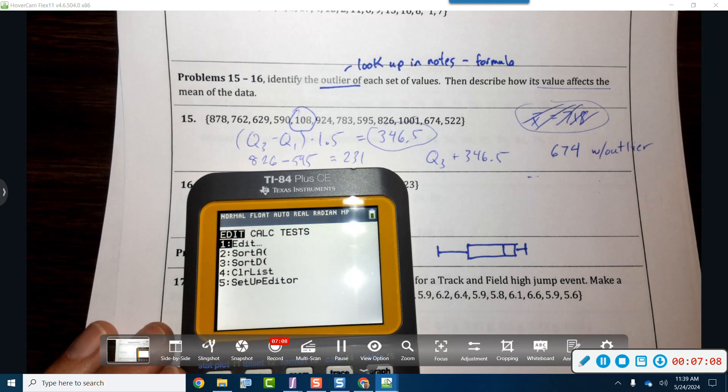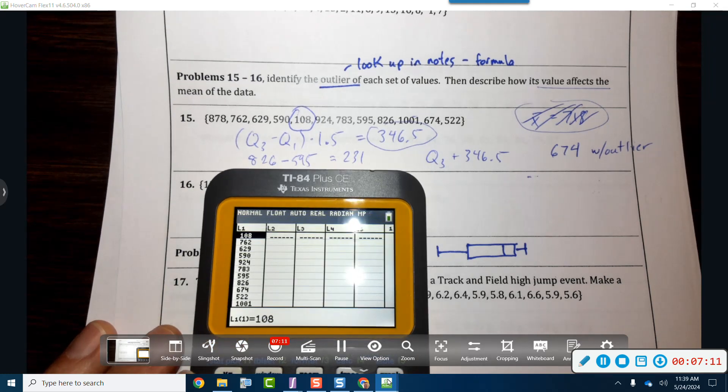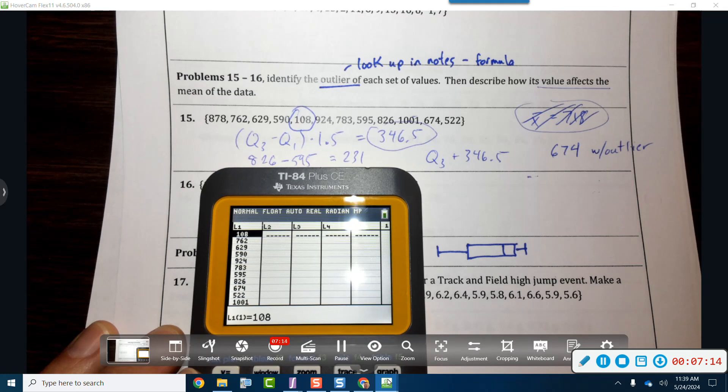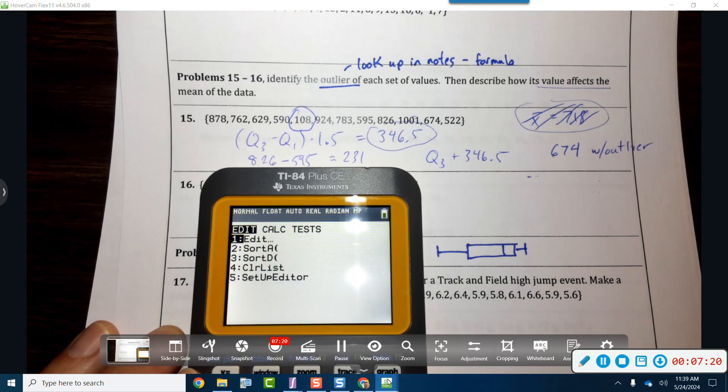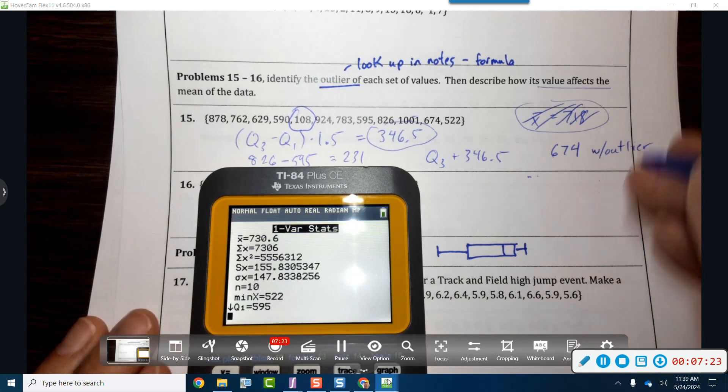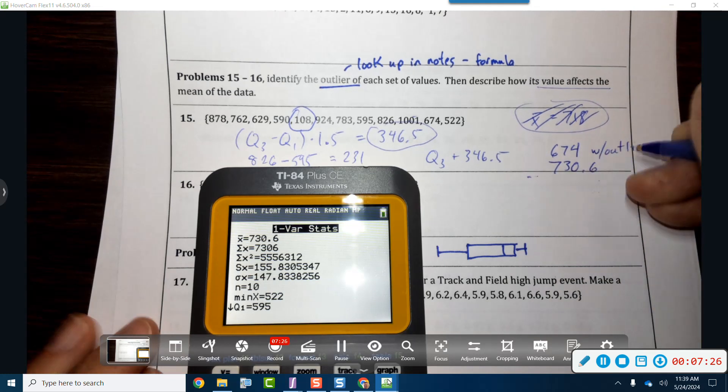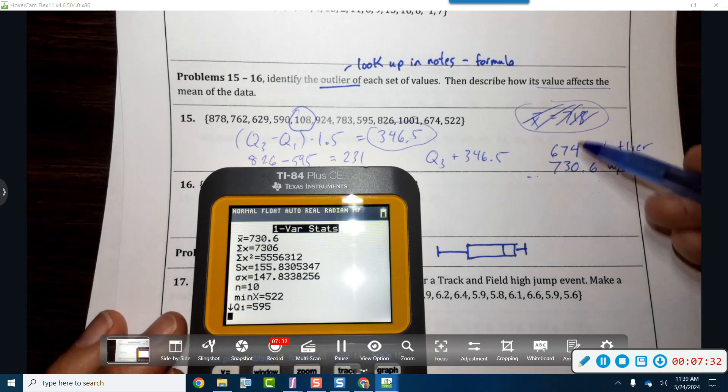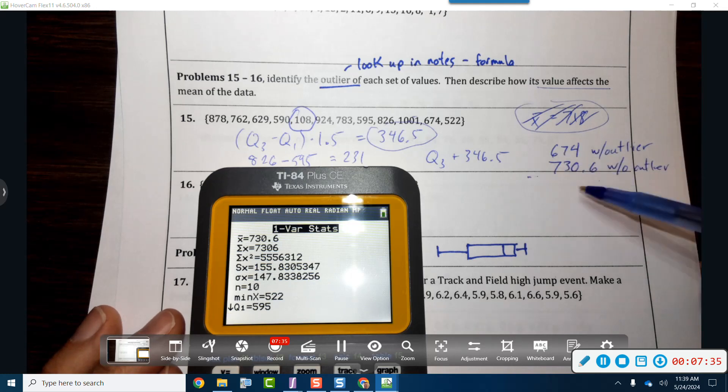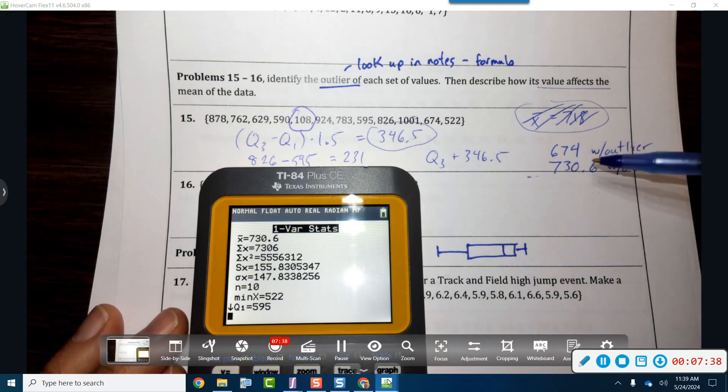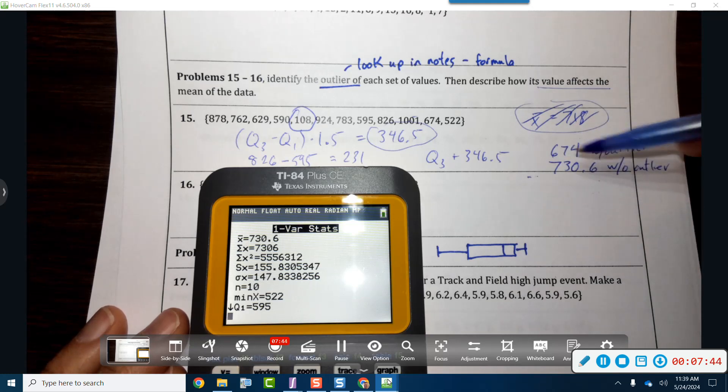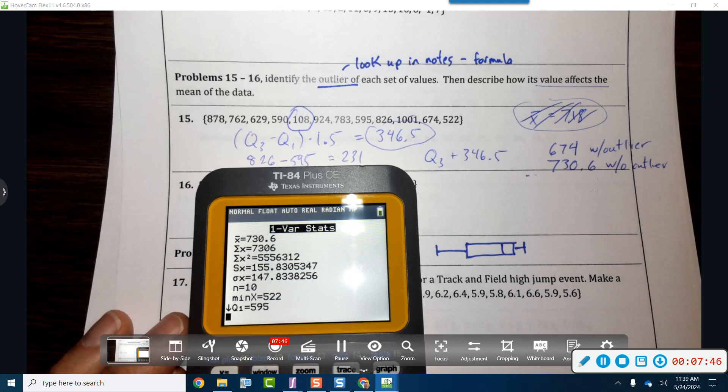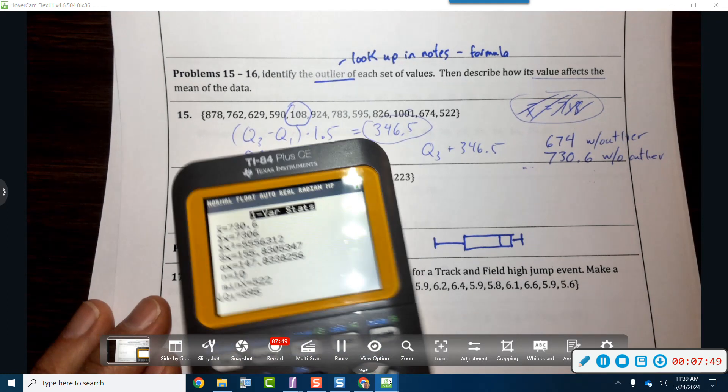Go back to stat edit, we're going to get rid of the 108, and then calculate that outlier. Now we got 730.6. So the outlier has quite a large effect. It does have a large effect. So the average without the outlier goes way up. It goes up by a little less than 60, 50 some odd points.